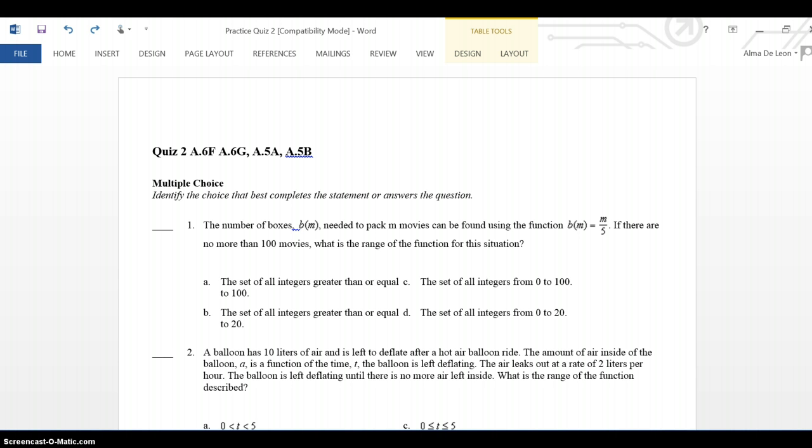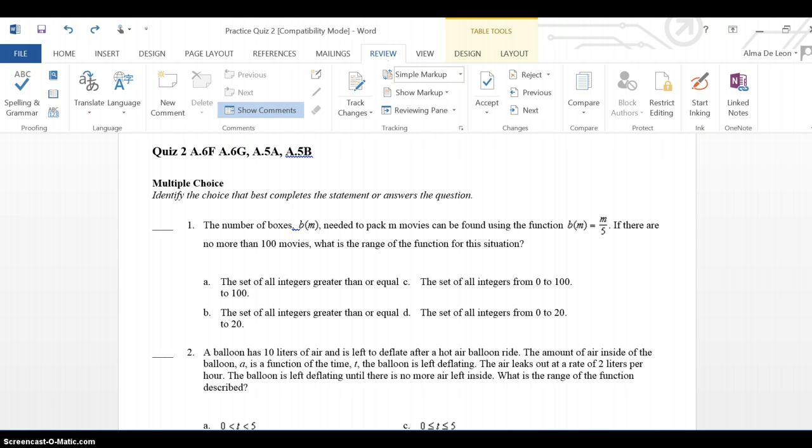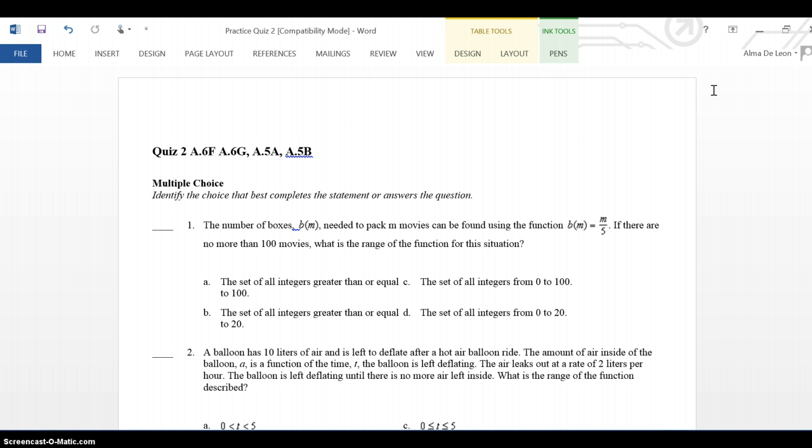Okay, so I know that I am packing M movies. I know that I'm not going to pack more than 100 movies. And I know that I have this equation BM equals M over 5. The BM in this case stands for the number of boxes that you would need to box your movies.